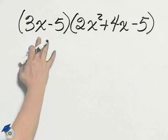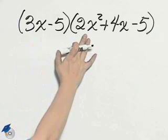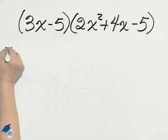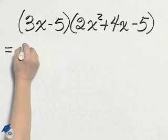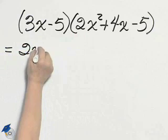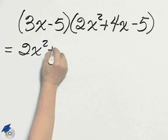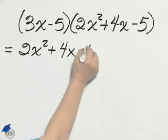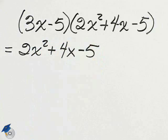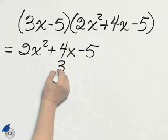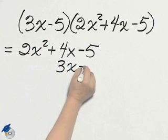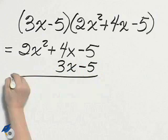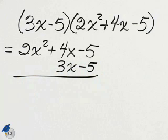Multiplying a binomial times a trinomial is easily done if you put the trinomial, 2x squared plus 4x minus 5, on top and the binomial below it, 3x minus 5, and recall old-fashioned multiplication.